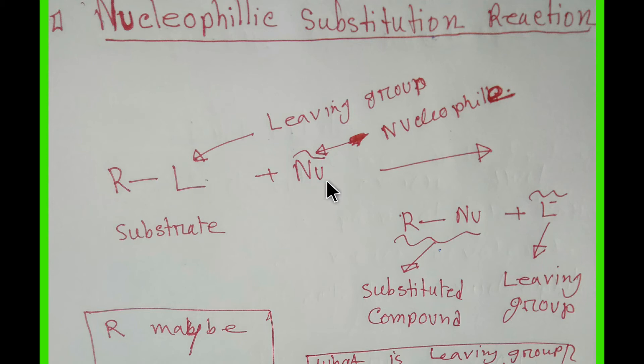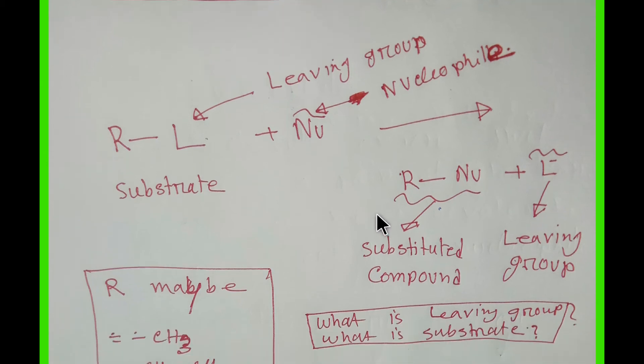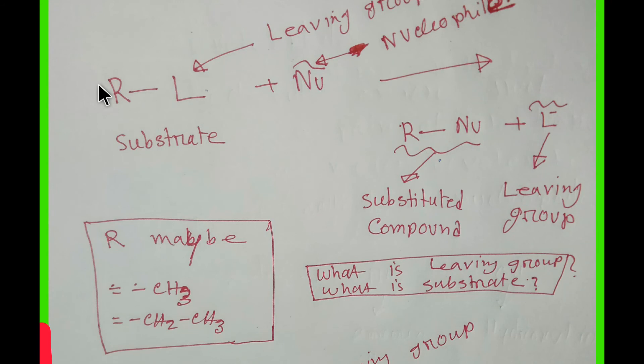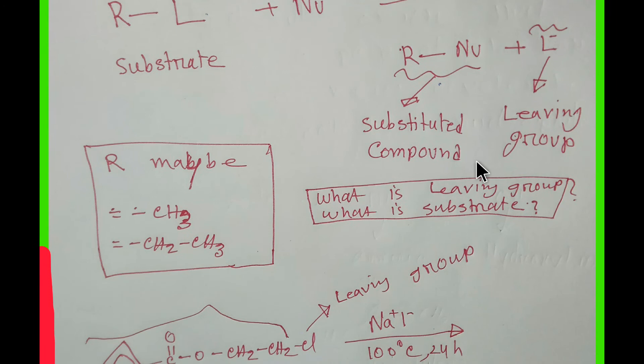So here, R is alkyl group. This alkyl group maybe methyl group or maybe ethyl group, right? And I have already told you the answer to these two questions: what is leaving group and what is substrate.